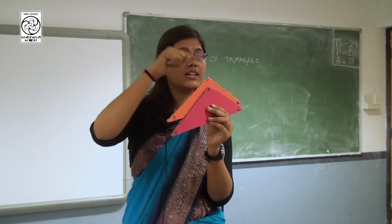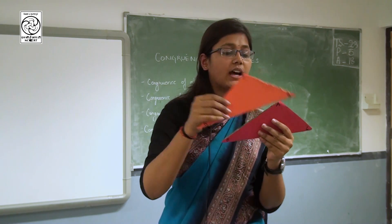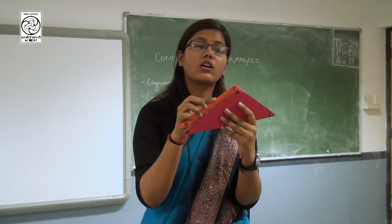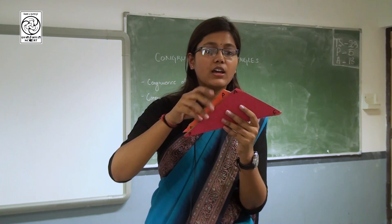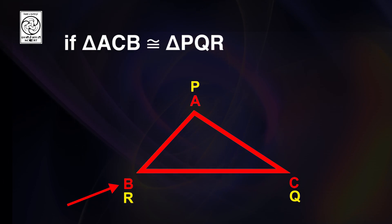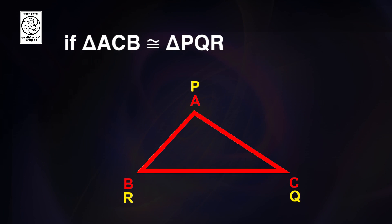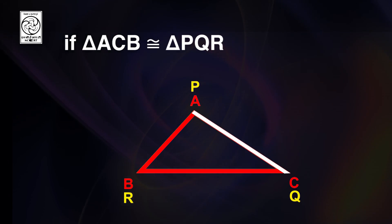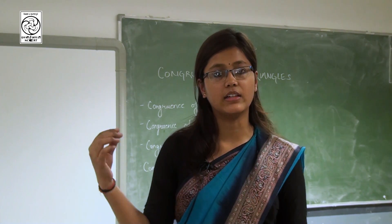If you pay attention, vertex A superimposes with vertex P, Q with C, and R with B. Sometimes it is not necessary that the triangles will be given in the same orientation — you can turn, you can flip this triangle and make it superimpose on the other. So when I say triangle ACB is congruent to PQR: A coincides with P, C coincides with Q, B coincides with R. Similarly, AB coincides with PR, CB coincides with QR, and AC coincides with PQ. This is how we represent congruency mathematically in symbolic form.